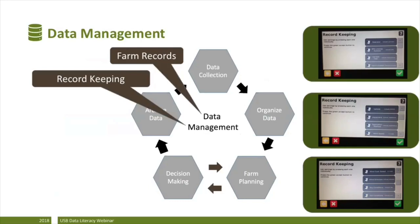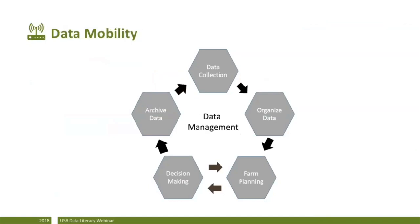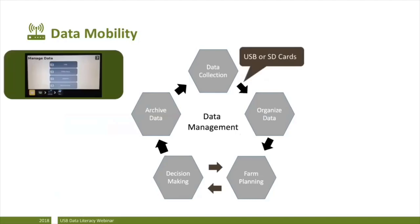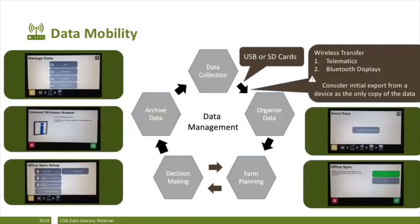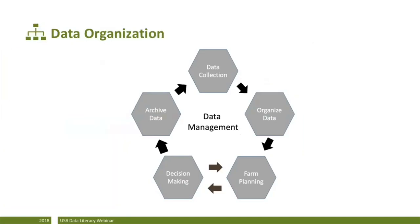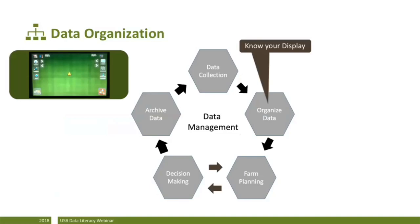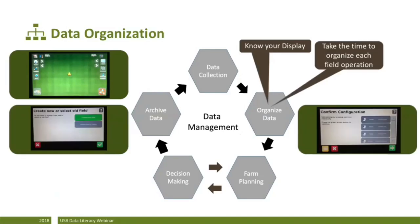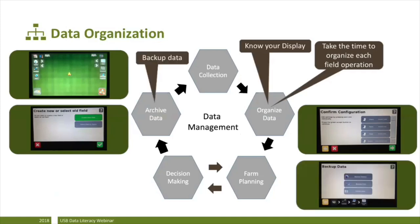Data mobility is important on the farm. The arrows indicate how data moves across the farm — that can be done using USB or SD cards. Other methods include telematics and Bluetooth wireless transfer. Data organization is also important: you should know your display very well so you can use it efficiently. Take time to organize each field operation — every time you pull into a field, your monitor may ask how you want to organize your data, which is important later on. And always back up your data as you collect it.